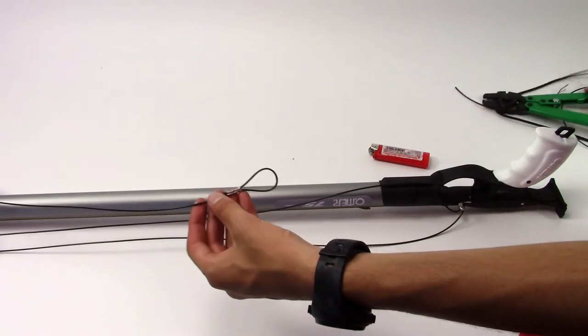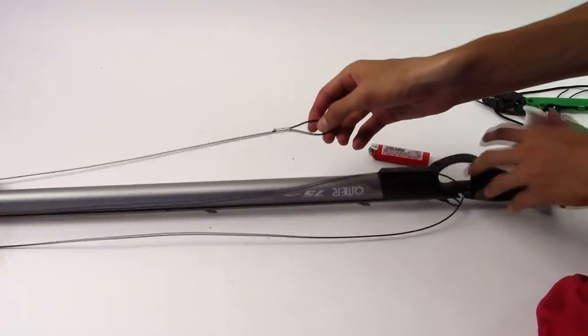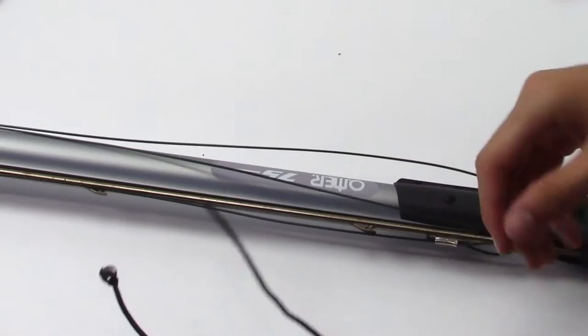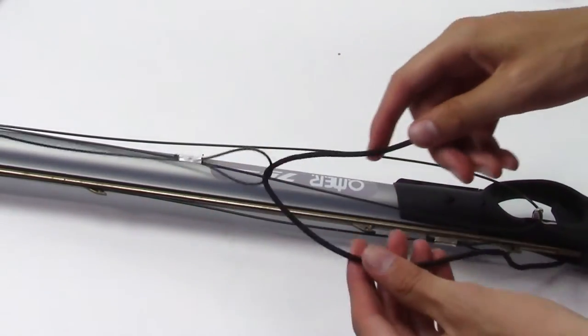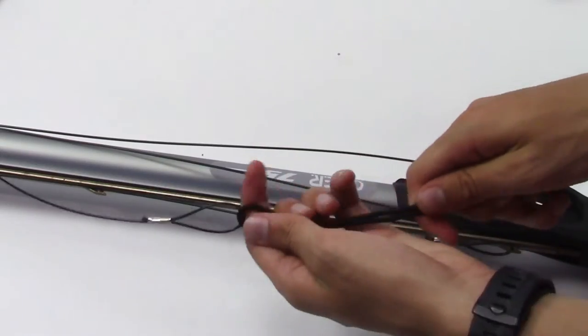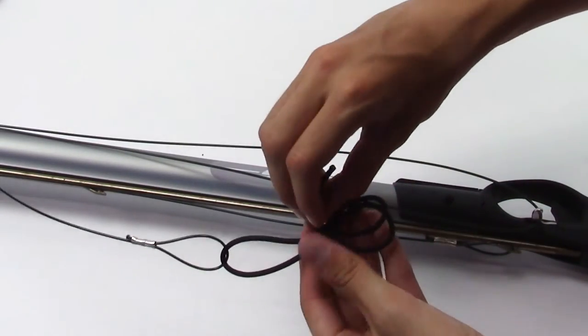Create your loop at that point. Take a piece of elastic cord and run it through the loop in the shooting line. You will then create a loop in the elastic cord using a simple overhand knot.